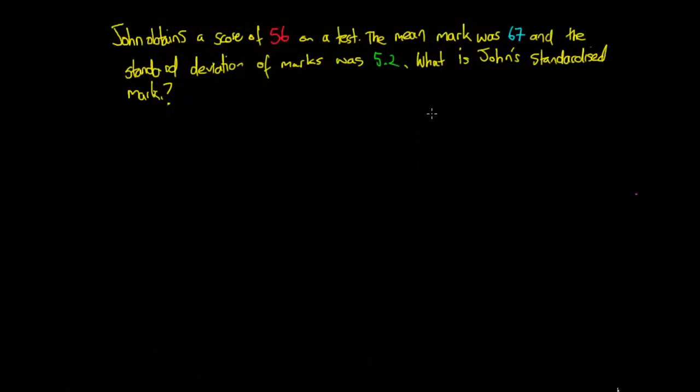Hey guys, so today we're just going to be doing an example around z-scores. So what we've got is this question: John obtains a score of 56 on a test, the mean mark was 67, and the standard deviation of marks was 5.2. What's John's standardized mark?